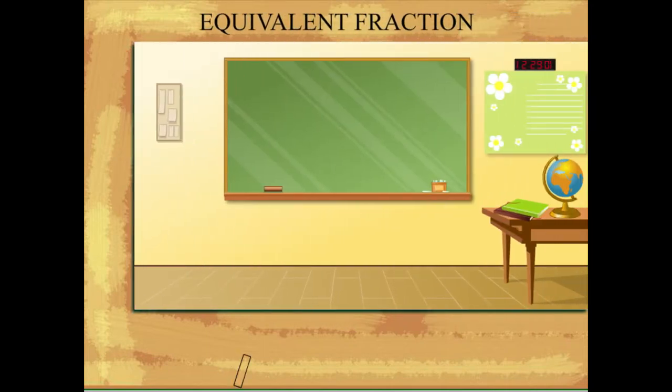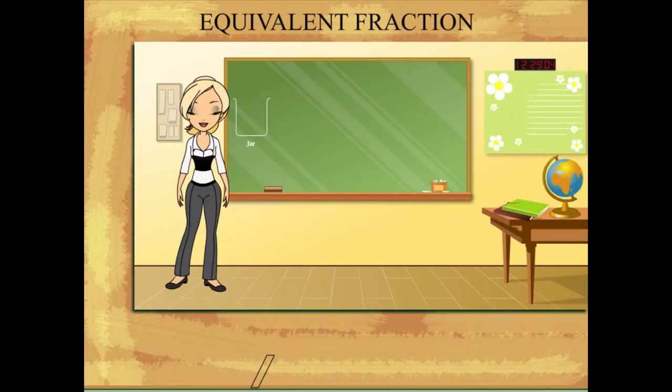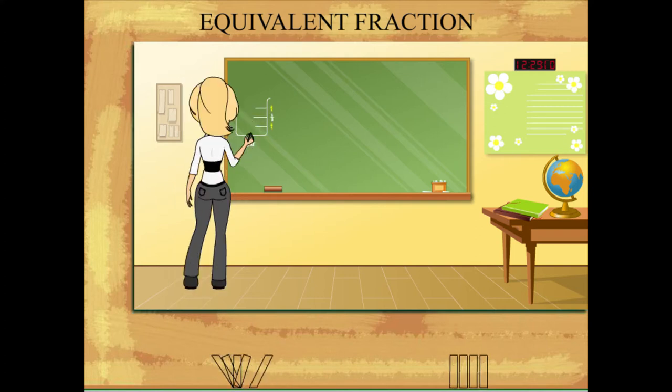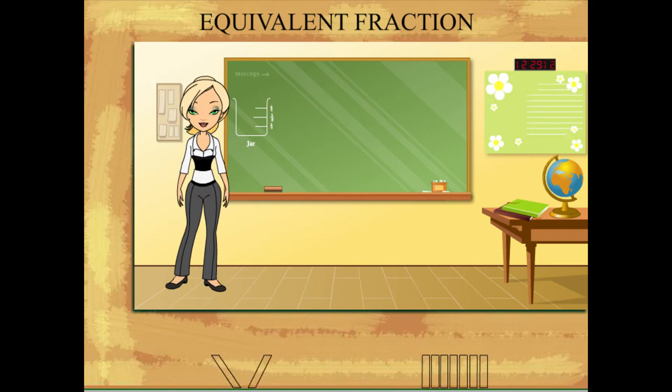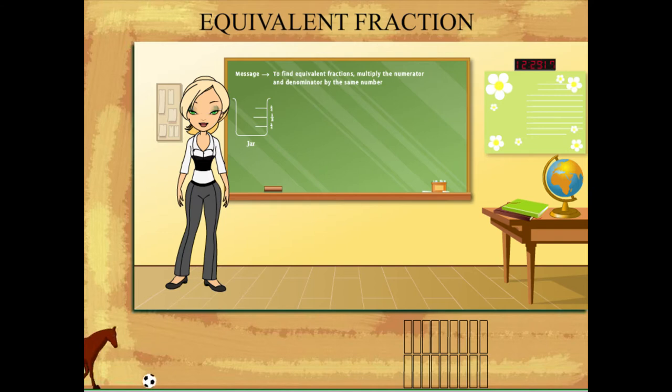Teacher Rosie marks the jar drawn on the board with fractions indicating the level of liquid in it. Rosie explains that to find equivalent fractions, multiply the numerator and denominator by the same number.